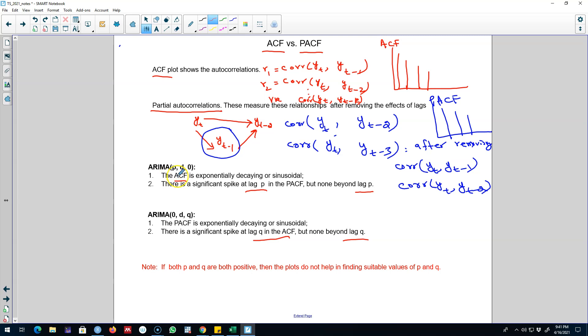choose both p and q using ACF and PACF. That is, if both p and q are positive, then these two plots may not help us to choose appropriate values of p and q. That is, we can only